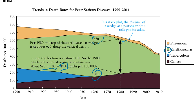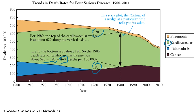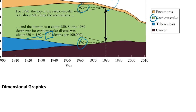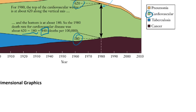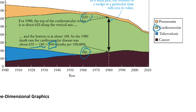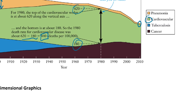Now let's talk about a couple of general trends from this graph. For pneumonia, we can see that it really decreased — it started out pretty thick and over time you can barely even see it, so pneumonia decreased significantly.